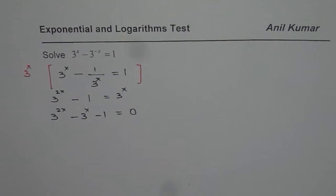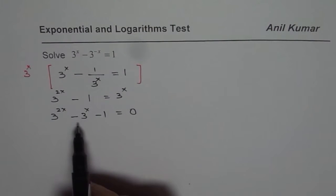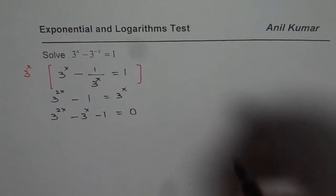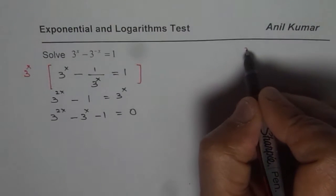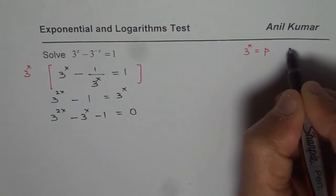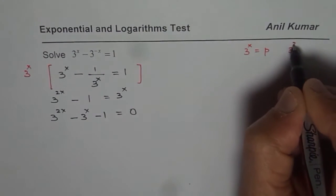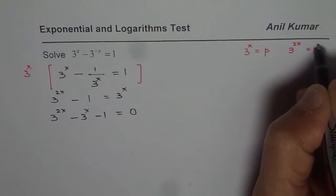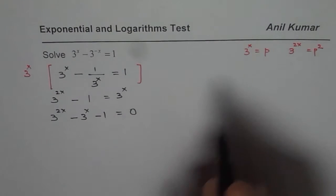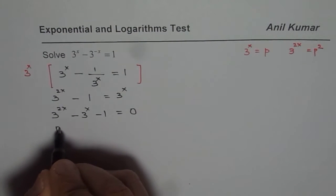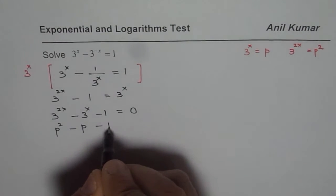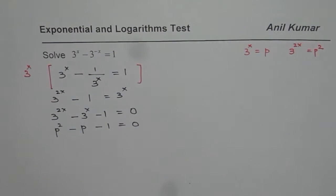To solve this equation, we can substitute — let us say 3 to the power of x equals to p. In that case, 3 to the power of 2x will be equals to p squared. So substituting p for 3 to the power of x, we get p squared minus p minus 1 equals to 0.